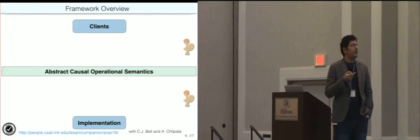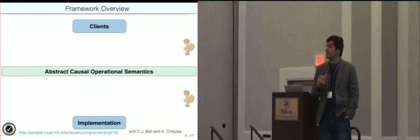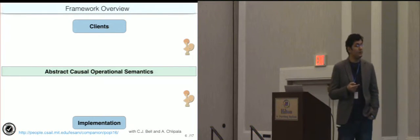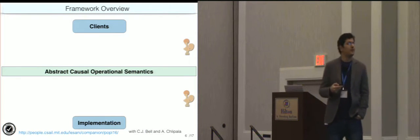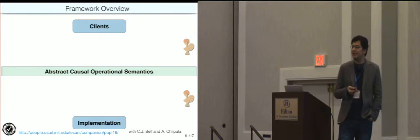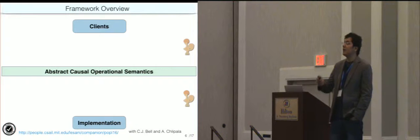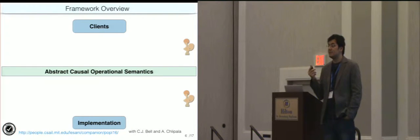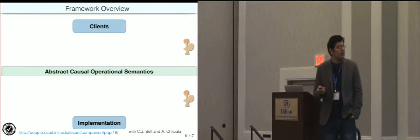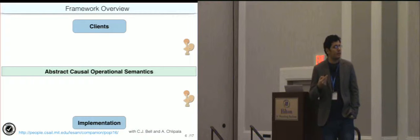Verification of both implementations and clients can improve the reliability of these systems. That's why we built this framework in Coq for verification of both implementations and clients of causally consistent distributed key-value stores. In the middle we have the abstract causal operational semantics, which is our specification. Given a concurrent program, it defines all the possible causally consistent executions of that program. It serves as an interface between our implementation and our clients.